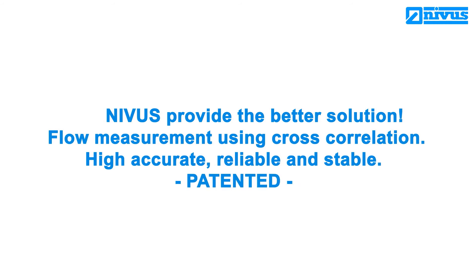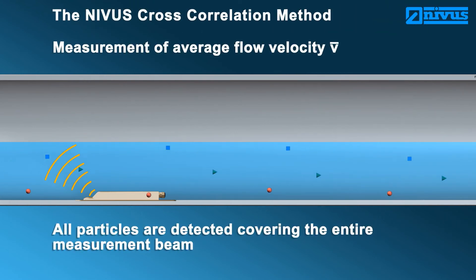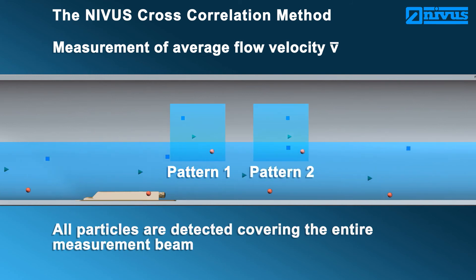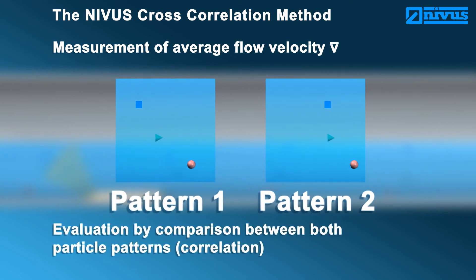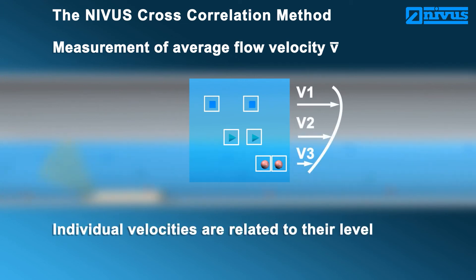NIVUS provides the better solution: flow measurement using cross-correlation — high, accurate, reliable, and stable. The NIVUS cross-correlation method is not a spot velocity measurement. Here, all particles are detected at the same time, covering the entire measurement beam. The particle images are evaluated by comparing correlation to each other, and this comparison repeats within a few milliseconds. In addition to the individual particle velocities, the relation to the flow level is available. Due to this, it is possible to represent the flow profile directly.